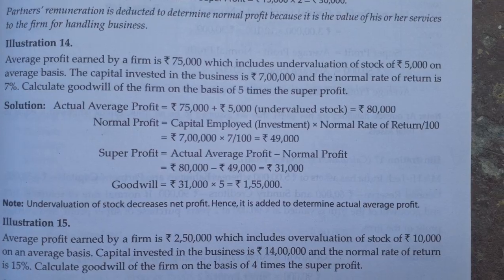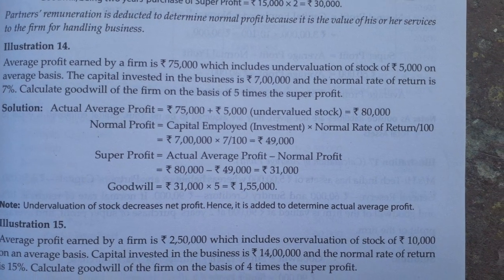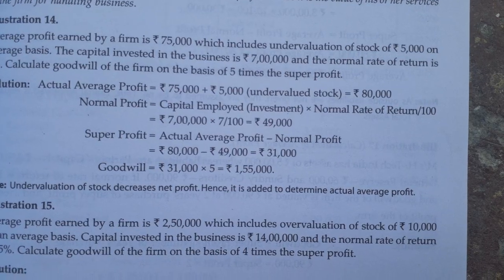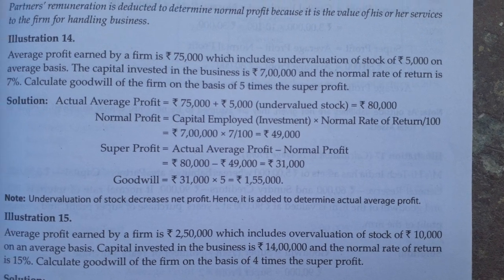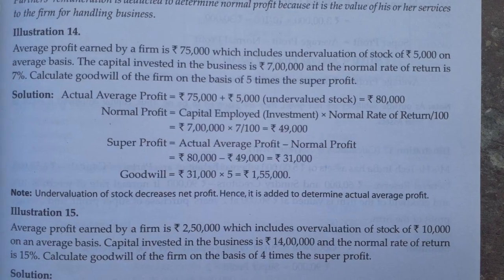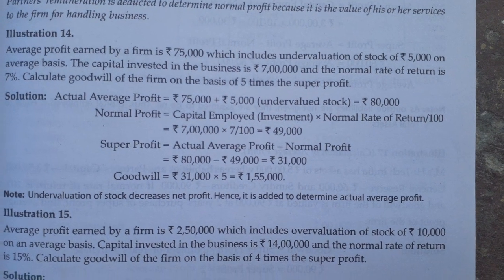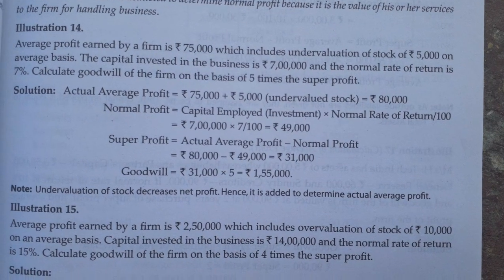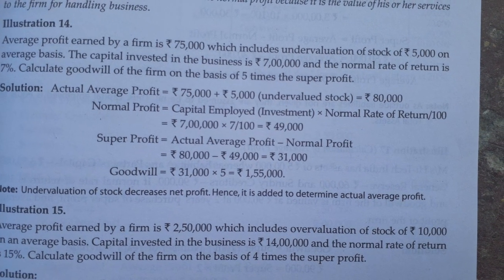The next step is to calculate normal profit. The formula for normal profit is: capital employed multiplied by the normal rate of return. Capital employed in our question is 7,00,000 and the rate of return is 7%. So normal profit will be 7% of 7,00,000, which is 49,000.